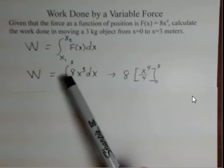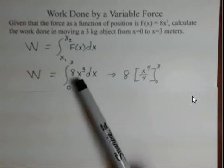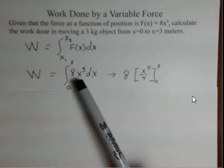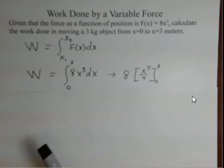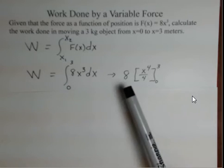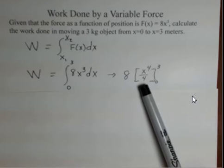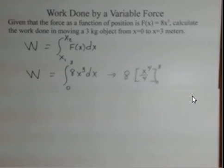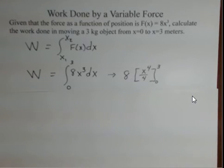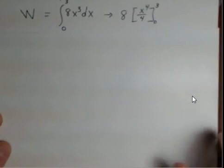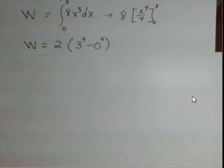The 8 can be pulled out of the anti-derivative as a constant. x cubed dx, anti-derivative process, changes the power to a 4. We go up one integer in the power, and we divide by that new power. Then we must evaluate this expression for the upper and the lower limits.